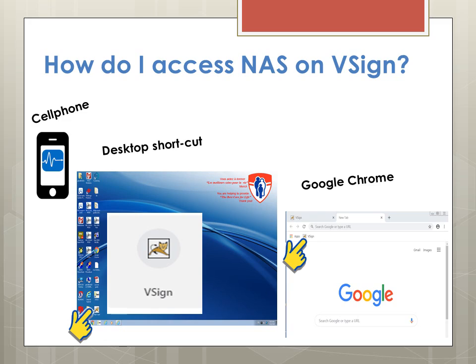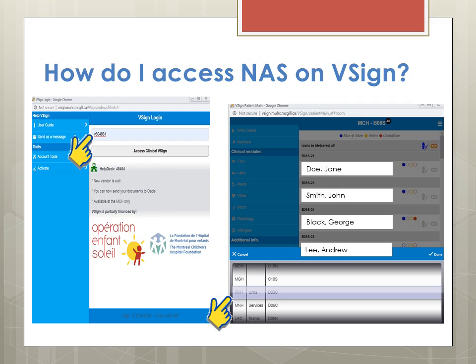How do you actually get onto the NAS on vSign? You can access vSign on your cell phone, through the desktop where there is a shortcut, or on Google Chrome it is saved as a favorite. Once you get onto the vSign login page, you will have to enter your OASIS ID username. You then go in and select your site — RVH — and then your unit — D3 — and then click Done.